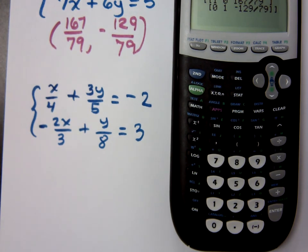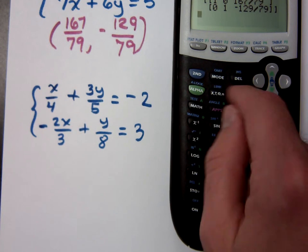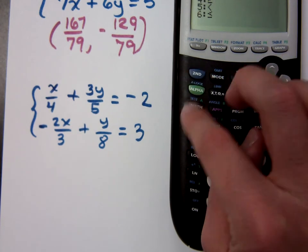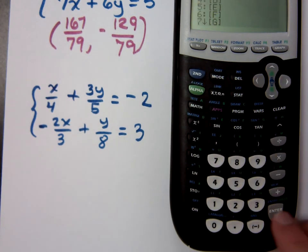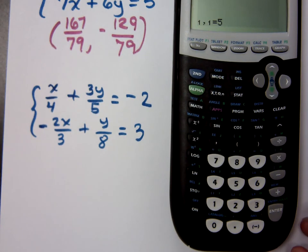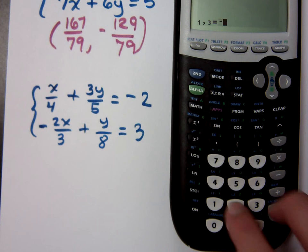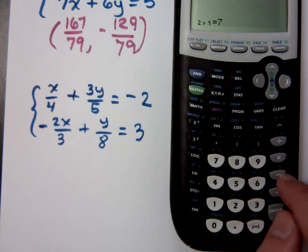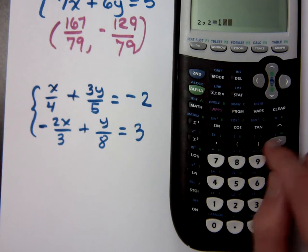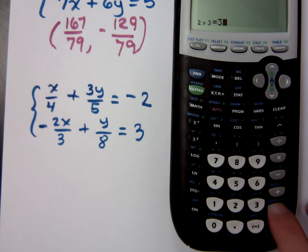Go to the calculator. Oops. So we need to edit this guy. So 2 by 3, what are the coefficients? 1 fourth. So 1 fourth. It's going to convert it to a decimal. Don't worry. 3 fifths. 3 fifths, negative 2. I've got negative 2 thirds, 1 eighth, and 3.